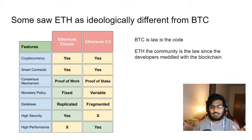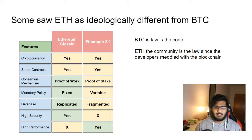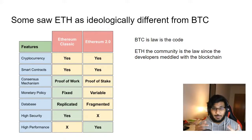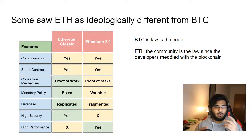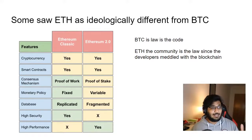This was a fundamental change for cryptocurrency. Some see it as: code is law — if somebody hacks you, you lose your money because nobody can change a Bitcoin block. But in Ethereum, the community is the law, since the developers meddled with the blockchain. This raises questions about the level of decentralization — Bitcoin's developers have far less power over the blockchain compared to Ethereum's developers.